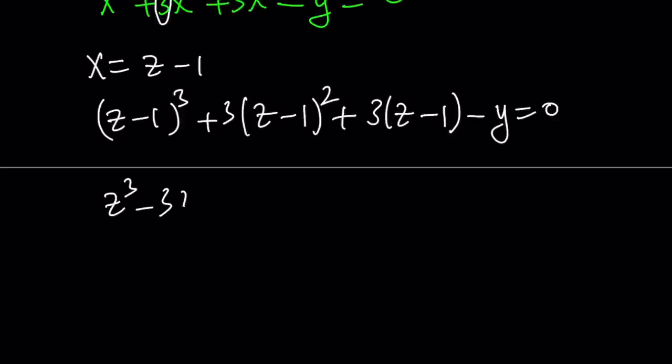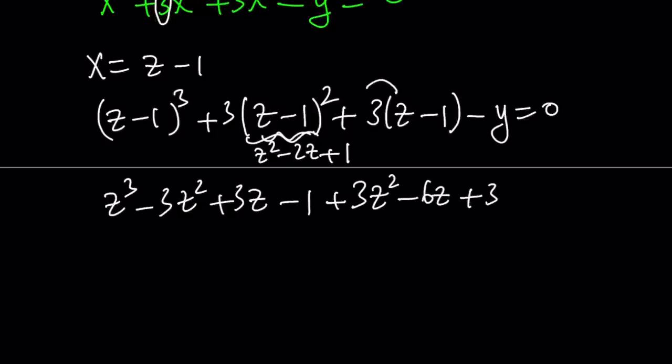So z cubed minus 3z squared plus 3z minus 1. And then notice that this is going to become z squared minus 2z plus 1. And I'm going to go ahead and multiply it by 3. So it's going to become 3z squared minus 6z plus 3. And then distribute that plus 3z minus 3 minus y equals 0. Awesome.